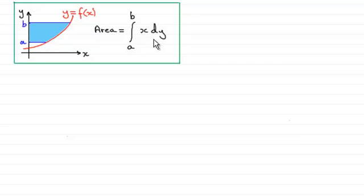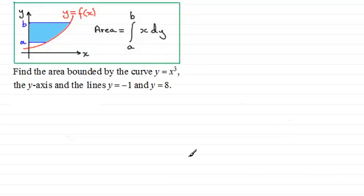To demonstrate this, we've got this example where we need to find the area bounded by the curve y equals x cubed, the y-axis, and the lines y equals minus 1 and y equals 8.